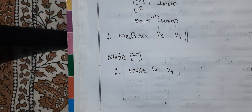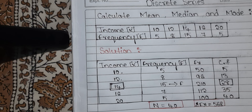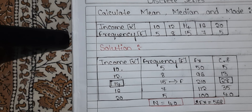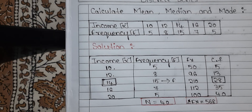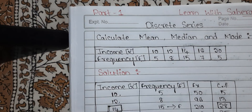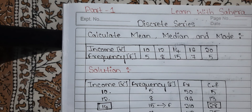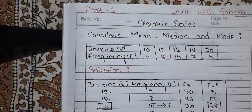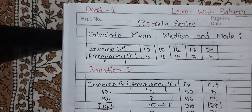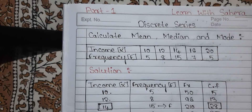So this is the calculation of mean, median and mode in discrete series. For the calculation of mean, median and mode in continuous series or grouped data, watch my other video which is part 2. Don't forget to subscribe our channel Learn with Sahira for more videos. For notes of all subjects and languages, text me on my Instagram. See you all in the next video. Bye-bye.